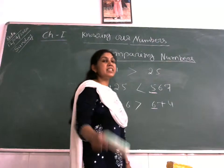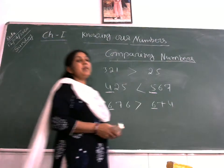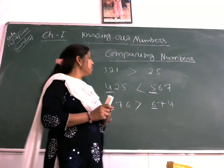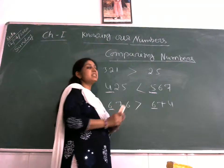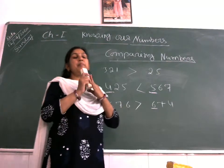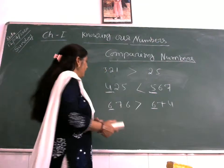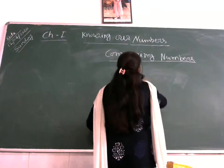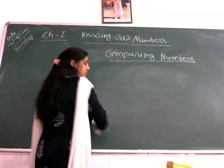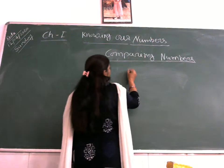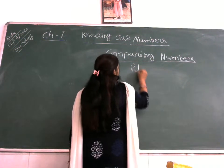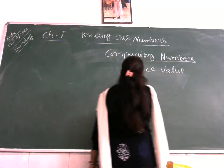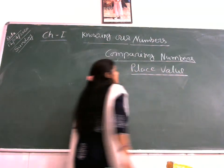For any numbers to compare, every number has a particular place. That is called a place value. So now let's talk about place value.